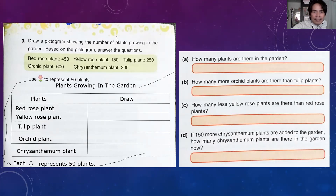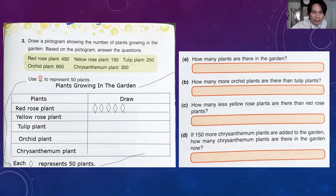450 divided by 50 is nine diamonds. I'll draw them — one, two, three... This symbol should be a flower but I cannot draw one with my mouse, so please understand, teacher! Five, six...